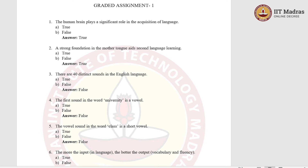Question number 4: the first sound in the word 'university' is a vowel. Option A, true. Option B, false. The right answer is option B, false. Because the first sound is not the letter 'u' that you see in the word 'university.' The first sound is 'ya' — university. You don't say 'university,' it's 'university.' Therefore, it is the 'ya' sound, which is a consonant, so it is not a vowel. The first vowel sound is 'ee' in the word 'university' — uni. That 'ee' is the first vowel sound.